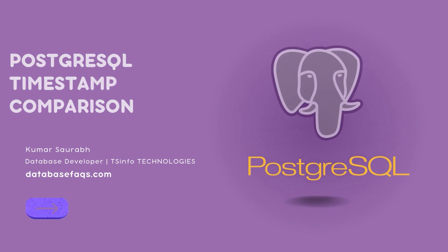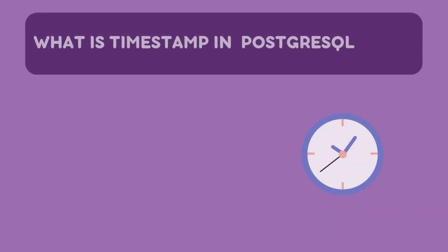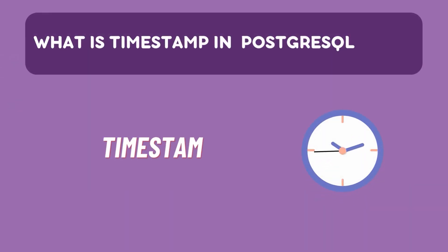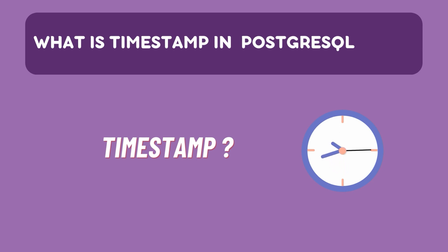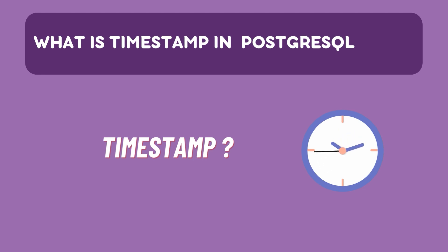First, let's understand what timestamps are. Timestamps are a common data type in database systems. They allow you to record a specific point in time and are often used to track when a record was created, updated, or accessed.